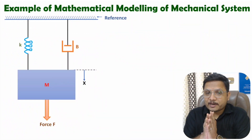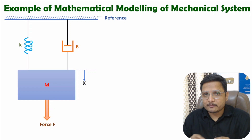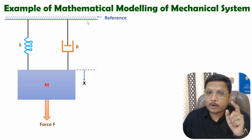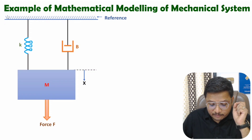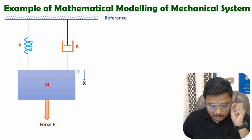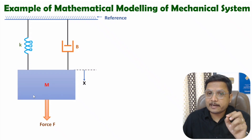Hello friends, welcome to Engineering Friend Family. In this video I will solve one very interesting problem based on mathematical modeling of a mechanical system. We have been given a mechanical system and we need to identify its differential equation. This system has a reference, a spring with constant k, a damper with damping constant b, a mass, and a force f applied causing displacement x.